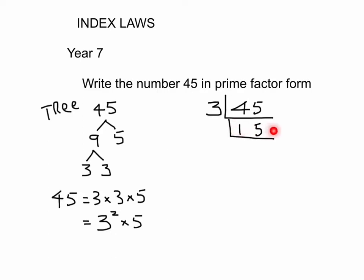What number divides into 15? So we start with a small number. 2 doesn't work but 3 will. So we put 3 again there. And 3 divides into 15 five times. And because all of these numbers are prime, we can stop. And our final answer is 45 equals 3 times 3 times 5, which we can write as 3 squared times 5.